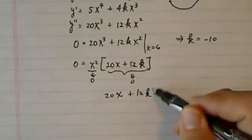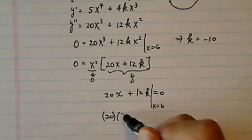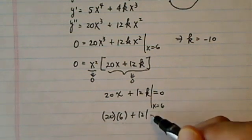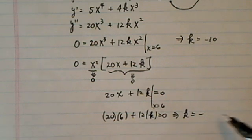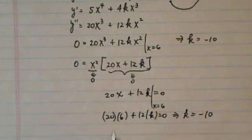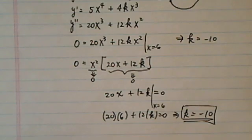and this happens when x is equal to 6, I have 20 times 6 plus 12k equal to zero. So therefore, k is equal to minus 10. This is 120 over here. 12 times 10 is 120, so k equal to minus 10. And then that's our final answer.